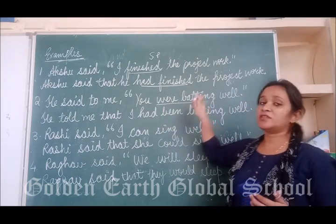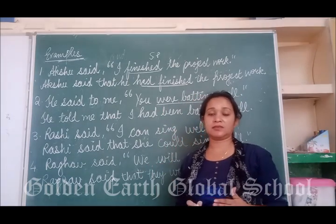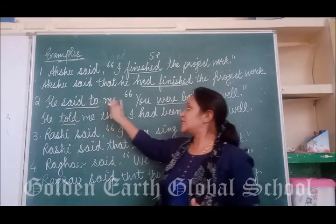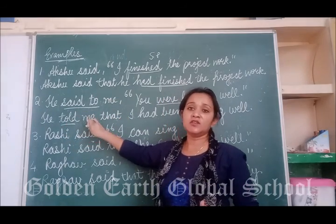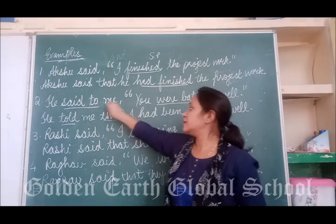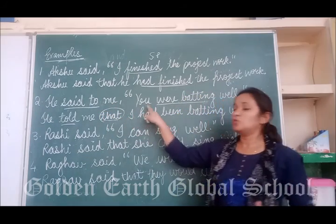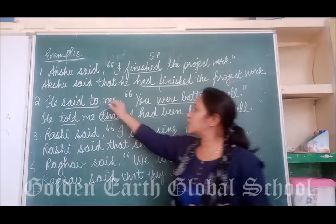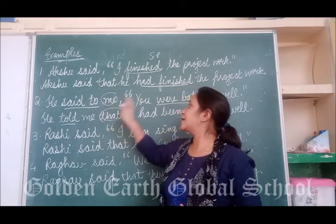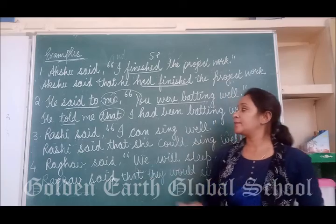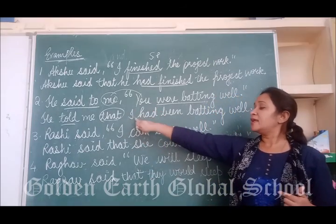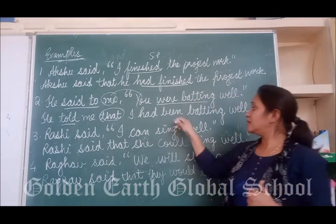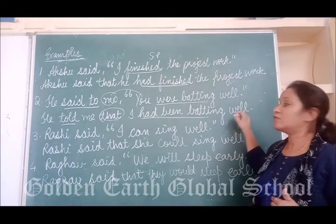Past continuous tense changes into past perfect continuous tense. 'Said to' changes into 'told.' So 'He said to me' becomes 'He told me.' Instead of commas, we use 'that.' He told me that — 'you' is the second person, and second person changes according to the object. The object is 'me,' so 'you' changes according to 'me,' which becomes 'I.' So: He told me that I had been batting. Full stop.